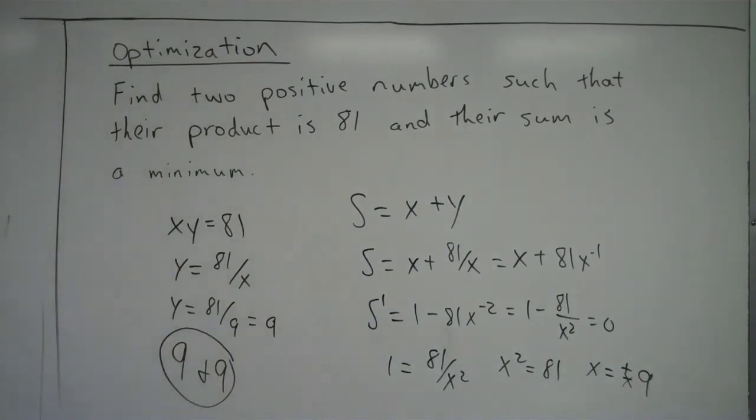Those are the two numbers that multiply together to be 81, and when you add them together, come up with the smallest sum, versus, let's say, 1 times 81, for instance. Those numbers multiply to be 81, but clearly when you add them together, their sum is larger than 9 plus 9.